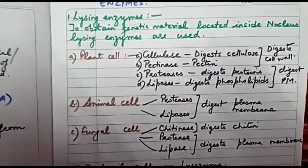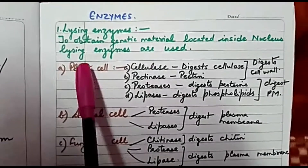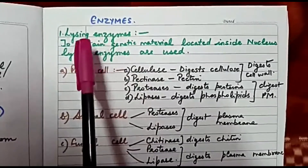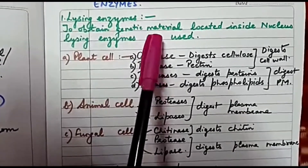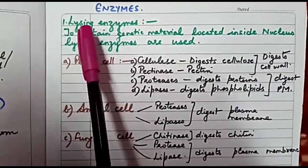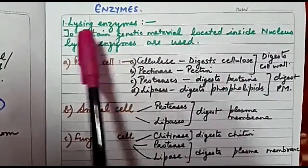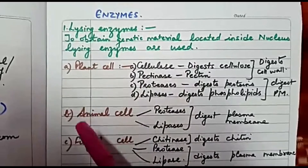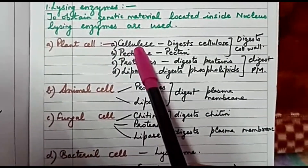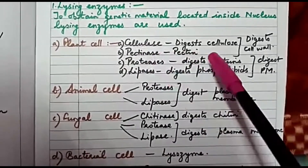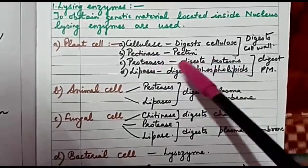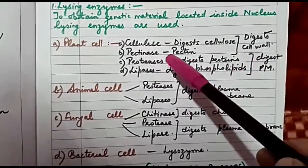The first kind of enzymes are lysing enzymes. To lyse something means to break and penetrate inside it. In biotechnology, we need genetic material, and we know that genetic material is located inside the nucleus. To reach this nucleus and obtain genetic material, lysing enzymes are used. These include proteases and lipases, which digest the plasma membrane, and cellulase and pectinase, which digest the cell wall.